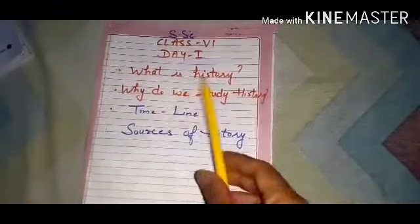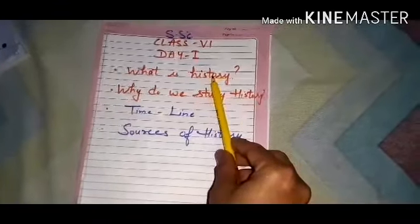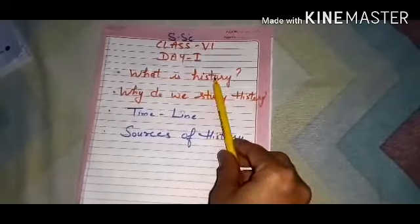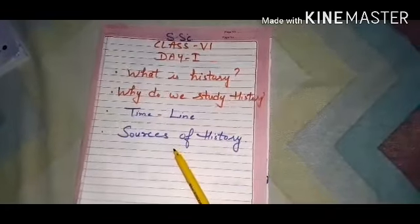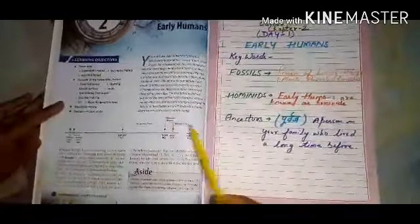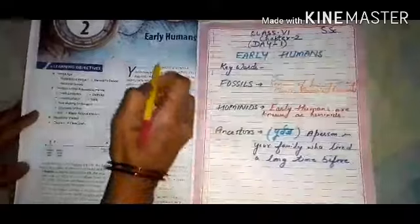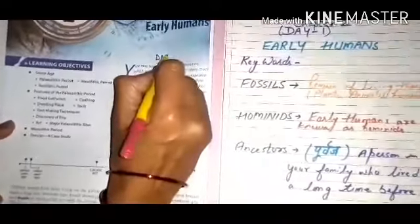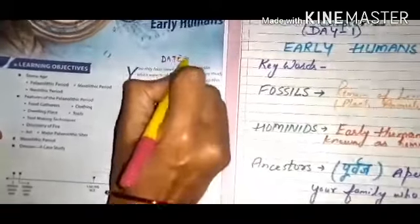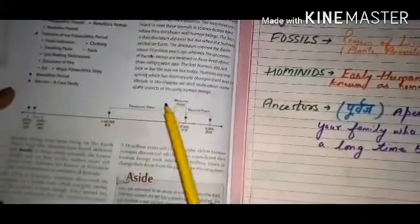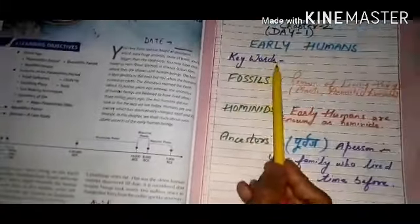Children, I think it is now very clear to you about all these topics I have covered. Now I am going to start the explanation of Chapter 2 — Early Humans. In this chapter, first of all we will discuss the key words.